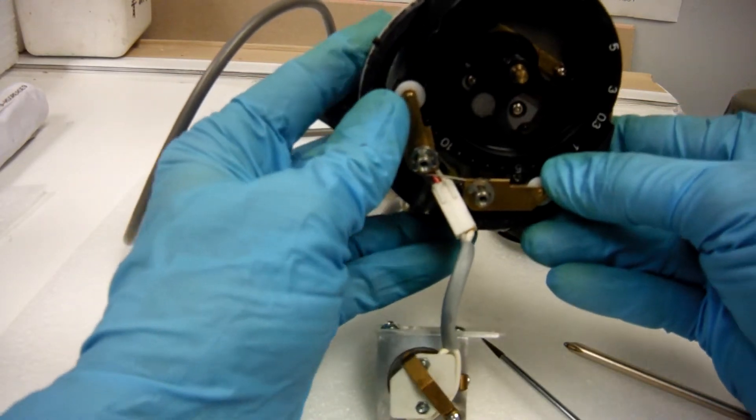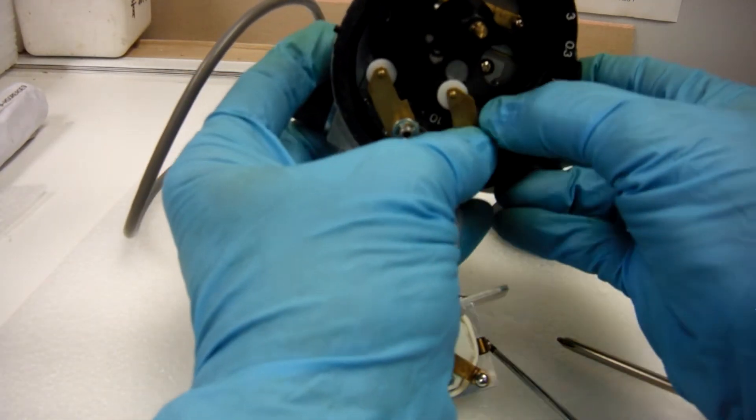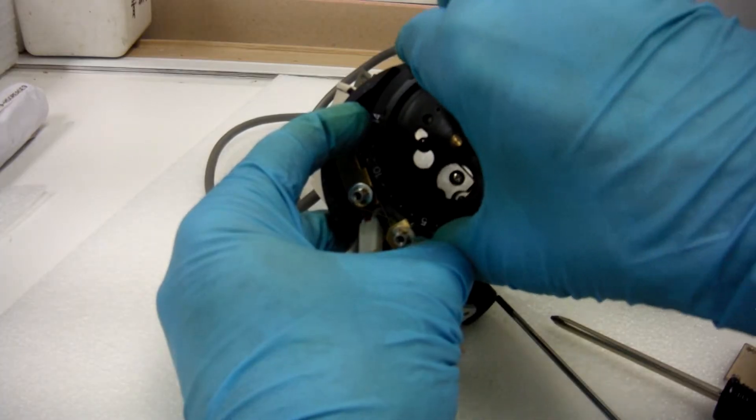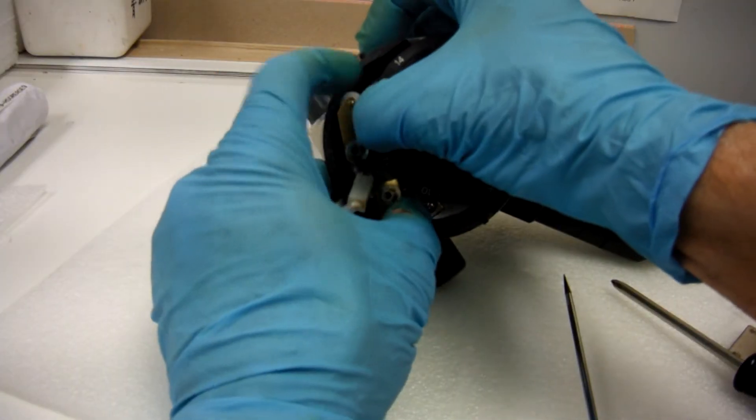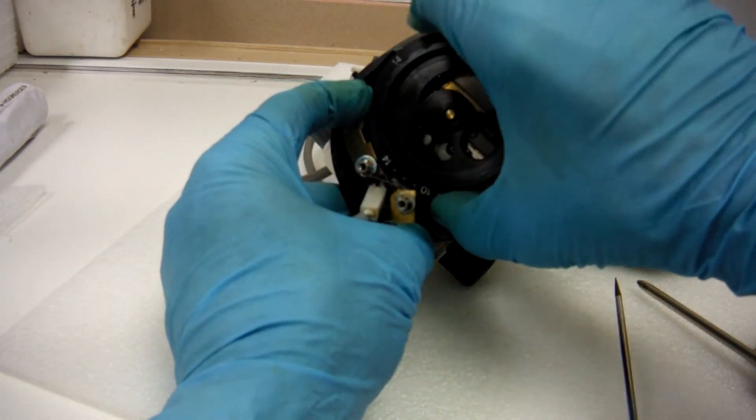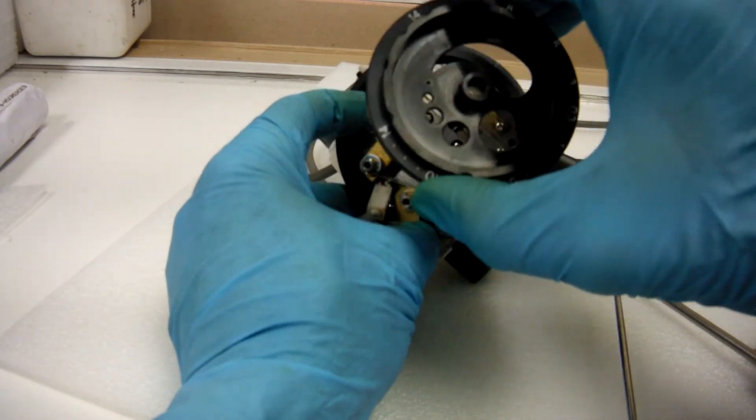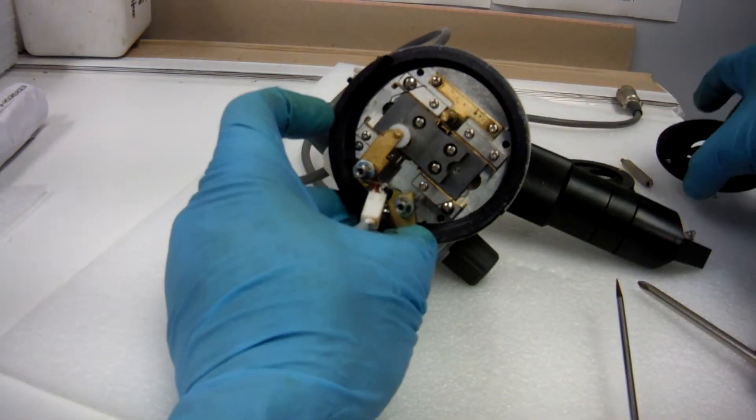To get the diaphragm wheel off you'll have to hold back the other arm at the same time. Pull that wheel off too. Might be a little tricky. You'll get it off.